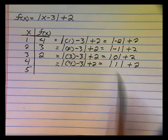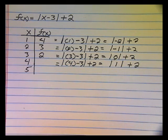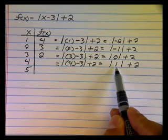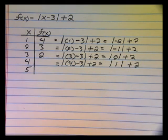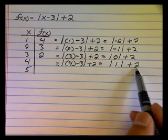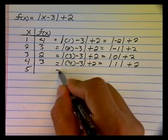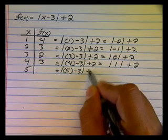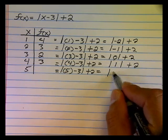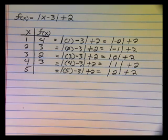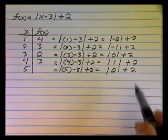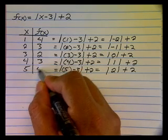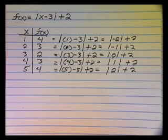In this situation, I now have the absolute value of one. Because an absolute value forces the value to be positive, if it's already positive, the absolute value symbol doesn't do anything at all. So it's simply one plus two, which is three. Five minus three is two, and since this value is already positive, the absolute value symbol will do nothing at all to it. And two plus two is four.